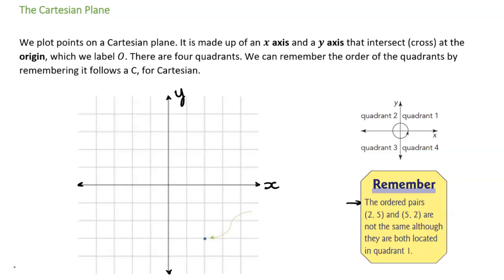You might have noticed I said the word 'axes' — that's the plural of axis. They cross at something called the origin, which is the point where they intersect, and we label that with an O for origin. There are four quadrants: the y-axis and the x-axis have broken this up into four areas — 'quad' meaning four.